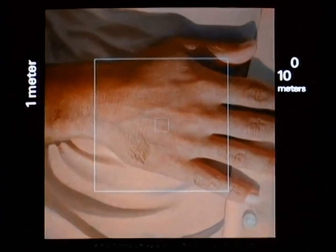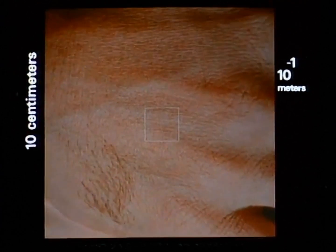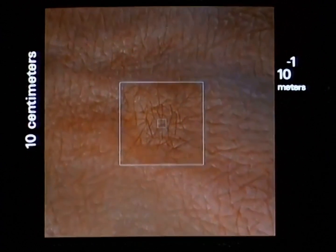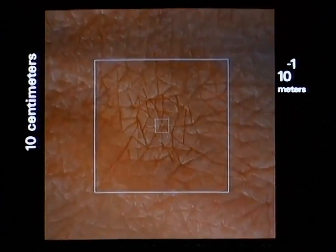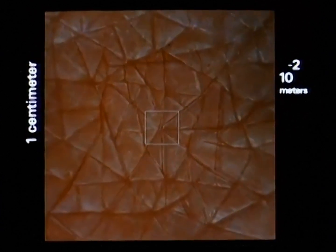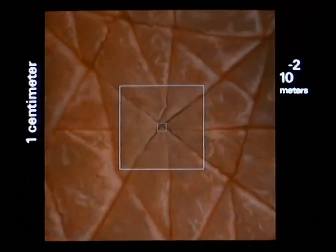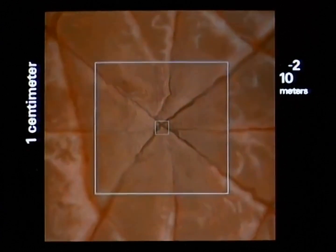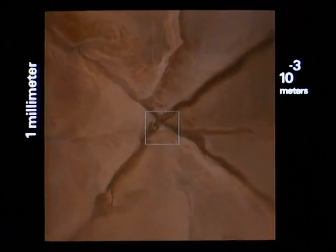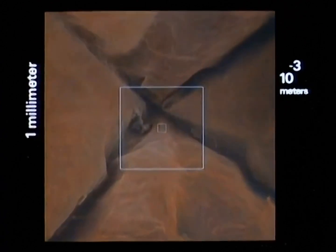Now we reduce the distance to our final destination by 90% every ten seconds, each step much smaller than the one before. At ten to the minus two, one one-hundredth of a meter, one centimeter, we approach the surface of the hand. In a few seconds, we've been entering the skin, crossing layer after layer from the outermost dead cells into a tiny blood vessel within.